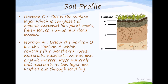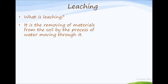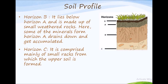Most minerals and nutrients in horizon A are washed out through leaching — which means removing materials from the soil by the process of water moving through it. Horizon B lies below horizon A and is made up of small weathered particles. Some of the minerals from horizon A drain down and get accumulated here.